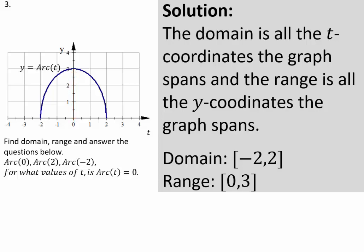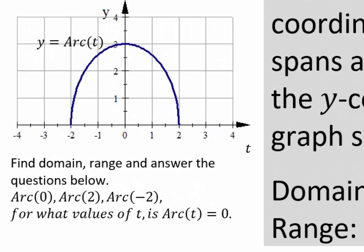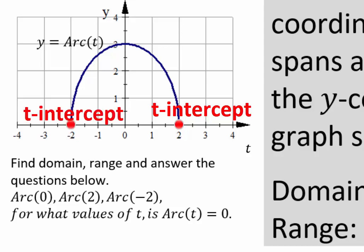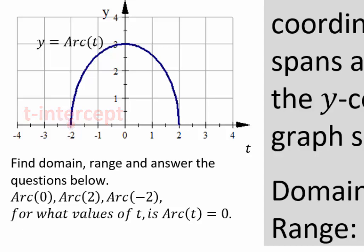Closed means the endpoints are included. Arc of 0 means the t coordinate is 0 — you're looking at the y-intercept, where the graph intersects the y-axis. So arc of 0 is 3. Arc of 2: when the t coordinate is 2, the y coordinate is 0. When the t coordinate is negative 2, the y coordinate is 0. So 2 and negative 2 are the t-intercepts. For what values of t is arc of t equal to 0? You're looking for t coordinates where y is 0 — in other words, the t-intercepts, which are negative 2 and 2.